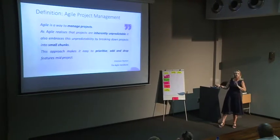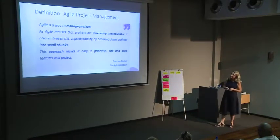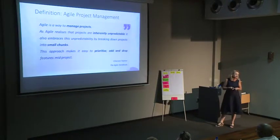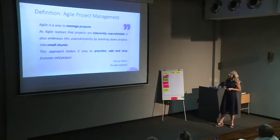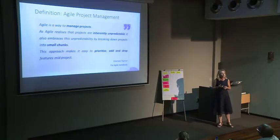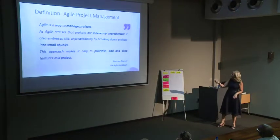Agile is a way to manage projects. It realizes that projects are inherently unpredictable, and it embraces that unpredictability by breaking projects down into smaller chunks. This approach makes it easy to prioritize, add, and drop features mid-project, because sometimes you think you know what you want, but as your business changes, you might have other priorities or things that fall off that you don't want anymore.